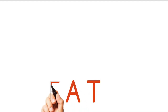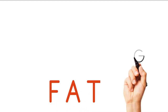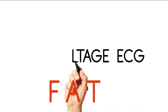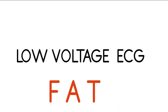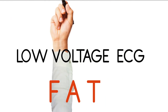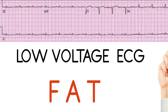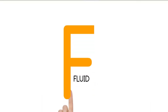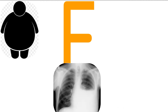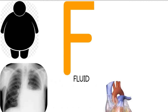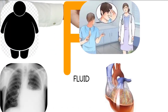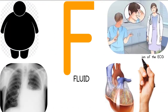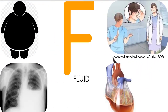Causes of low-voltage ECG — remember FAT. F: Fat — obesity. Fluid — pleural effusion, tamponade. Factitious — unrecognized standardization of the ECG at half the usual gain.